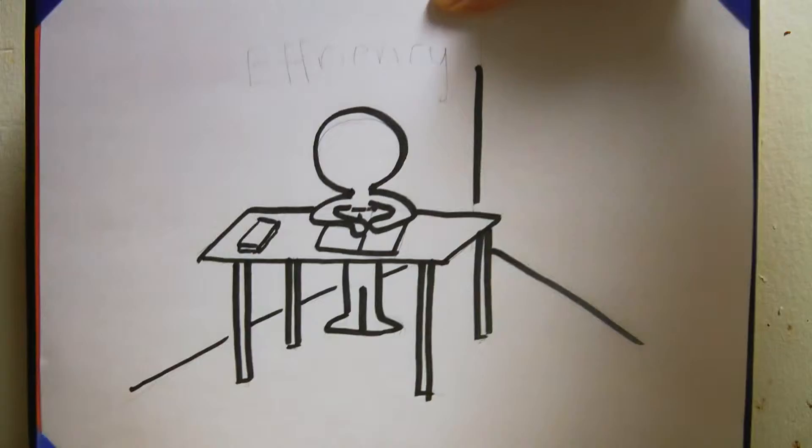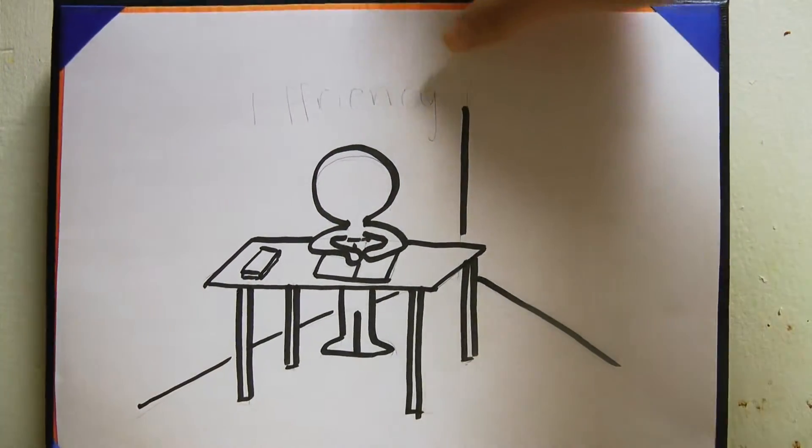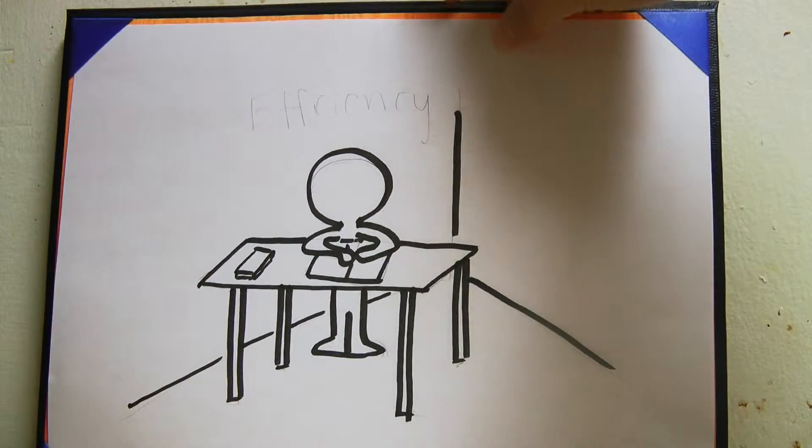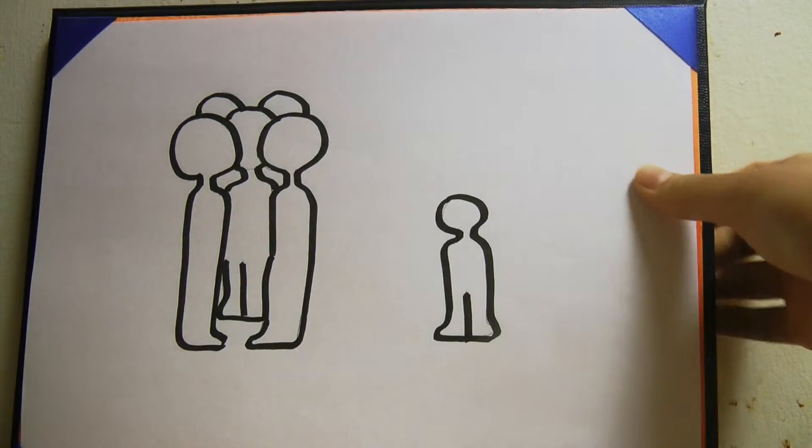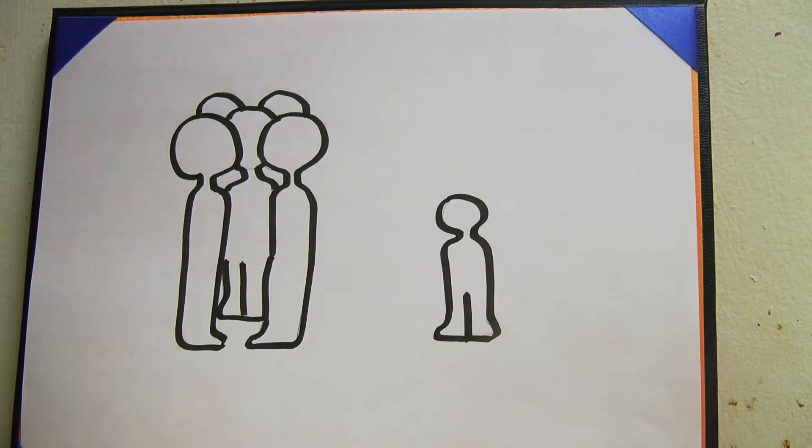Sign number four, introverts find it's more efficient to work alone. Sign number five, introverts tend to stay quiet in a big group of people. They won't talk until they have to.